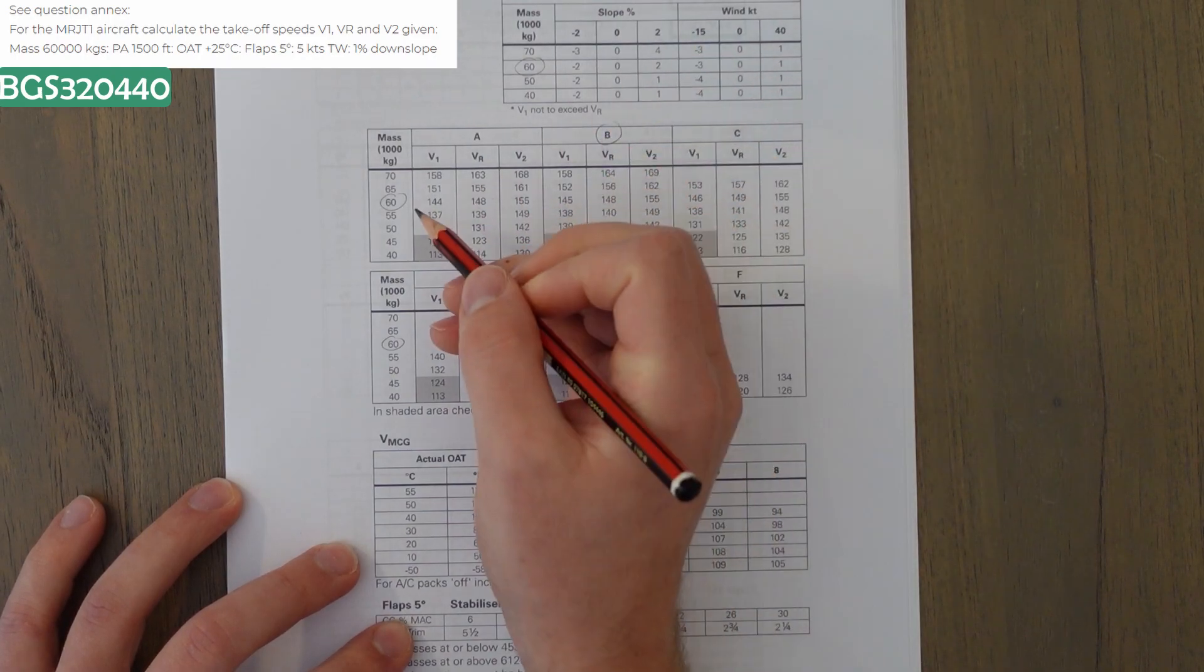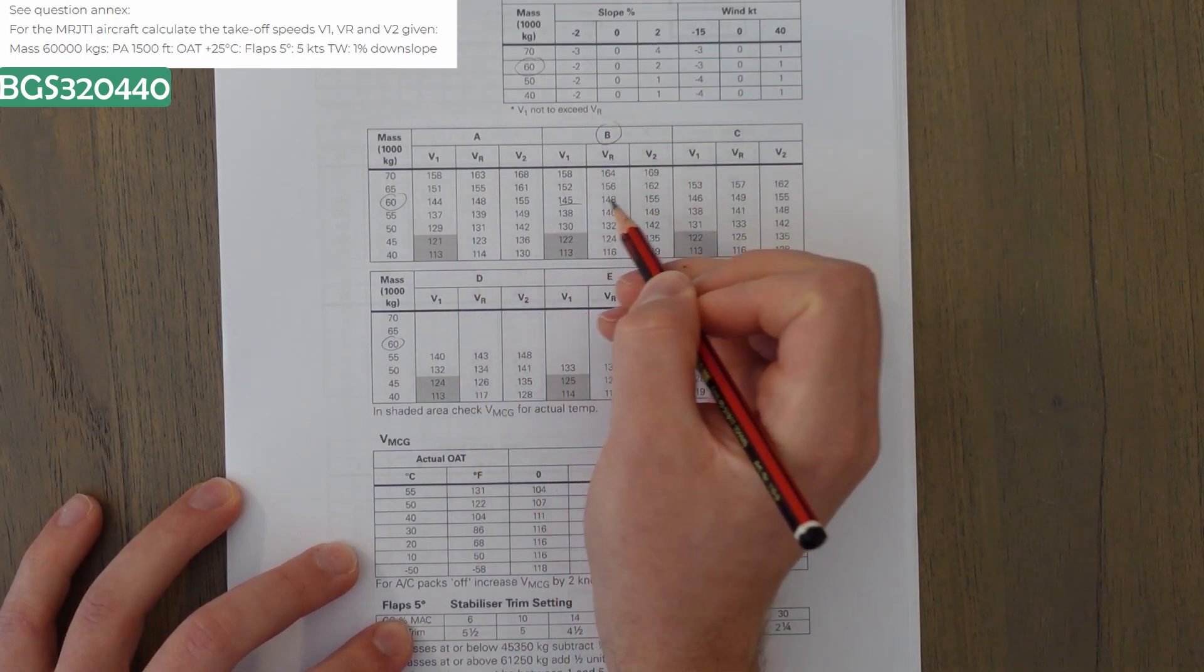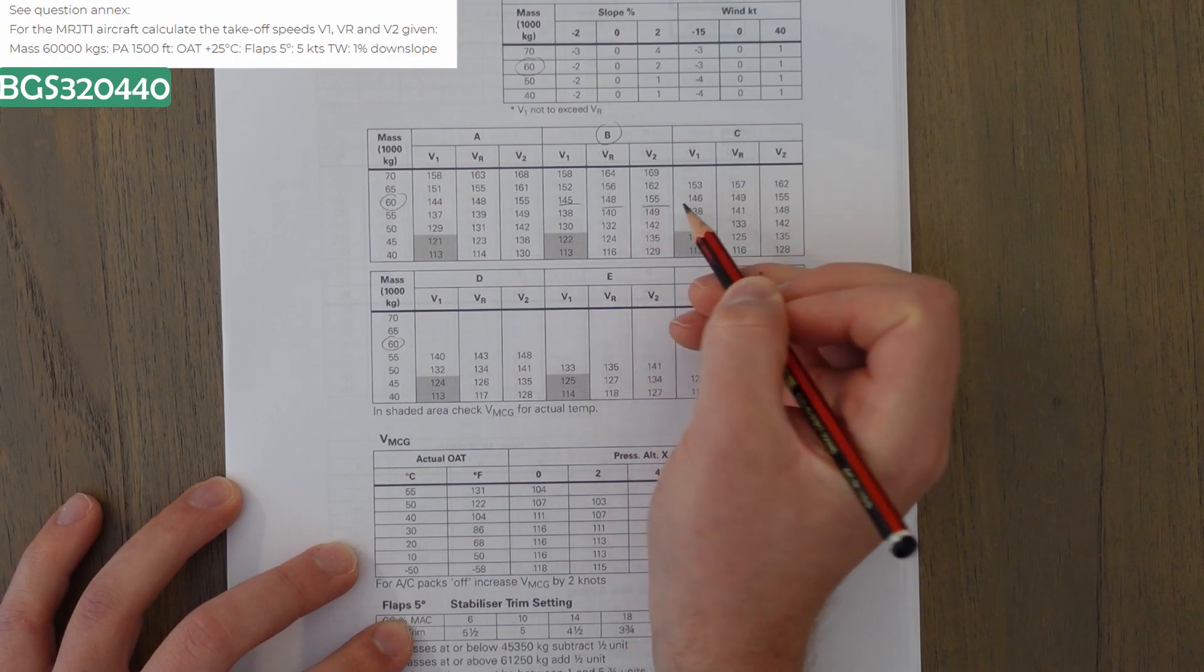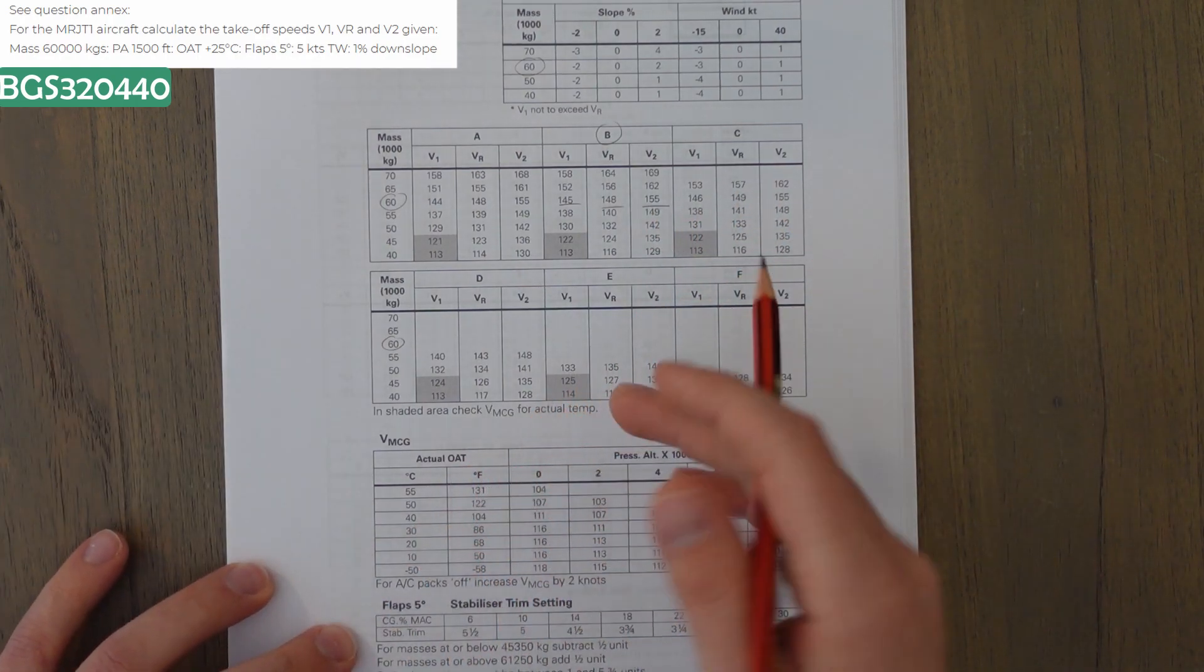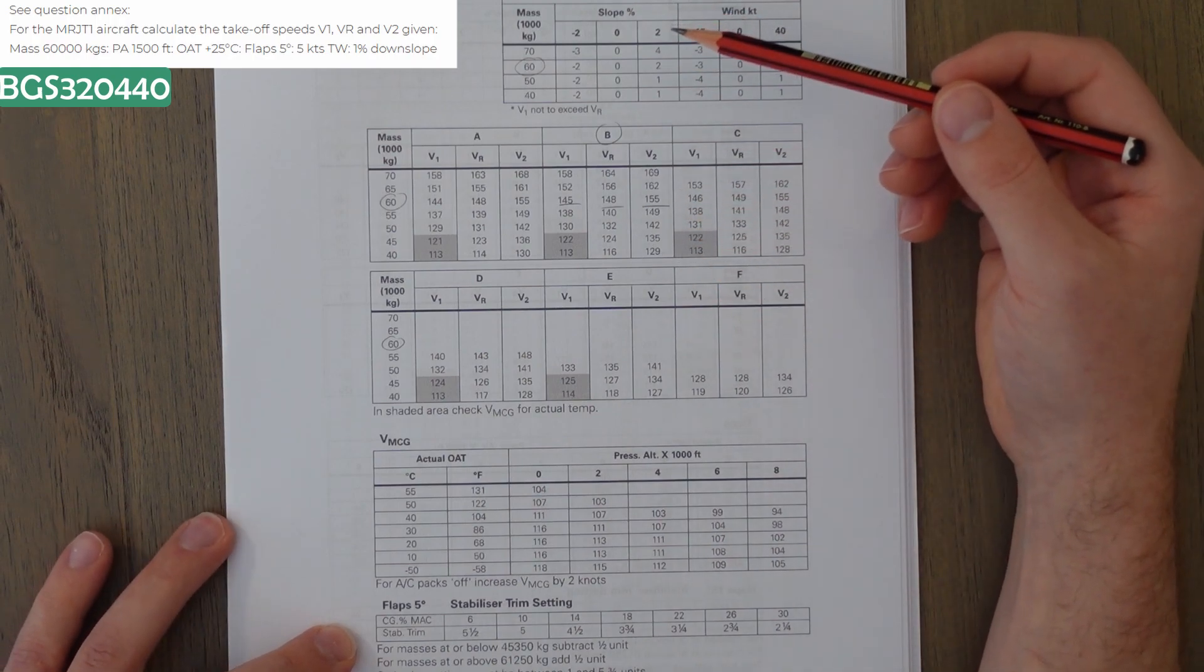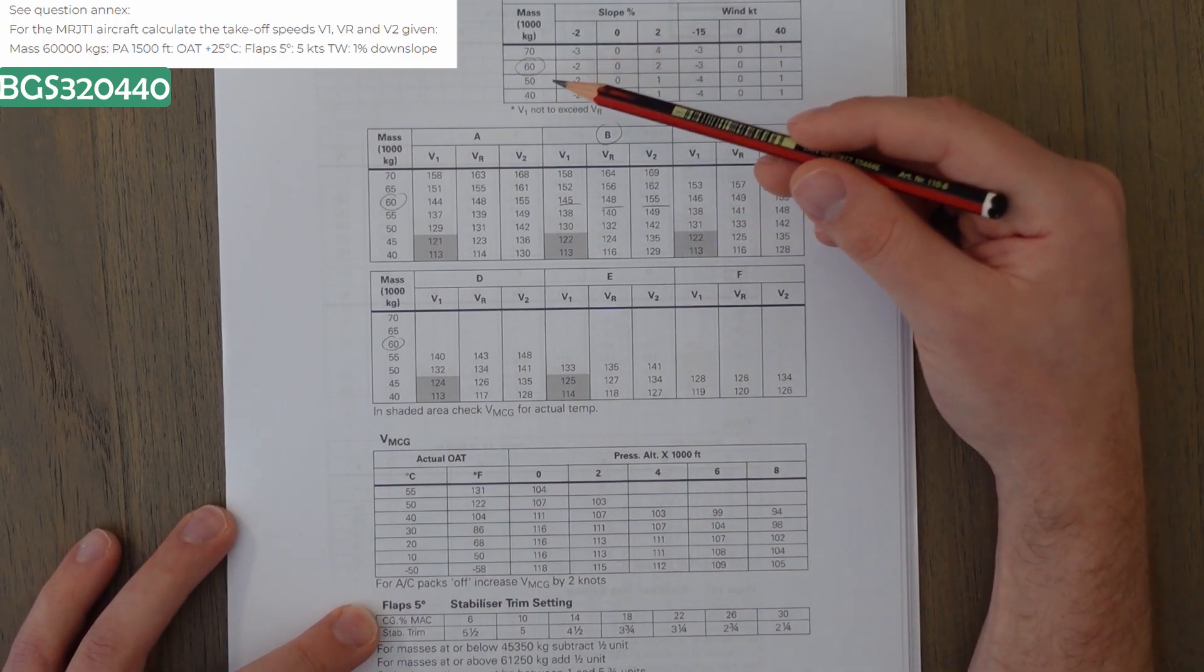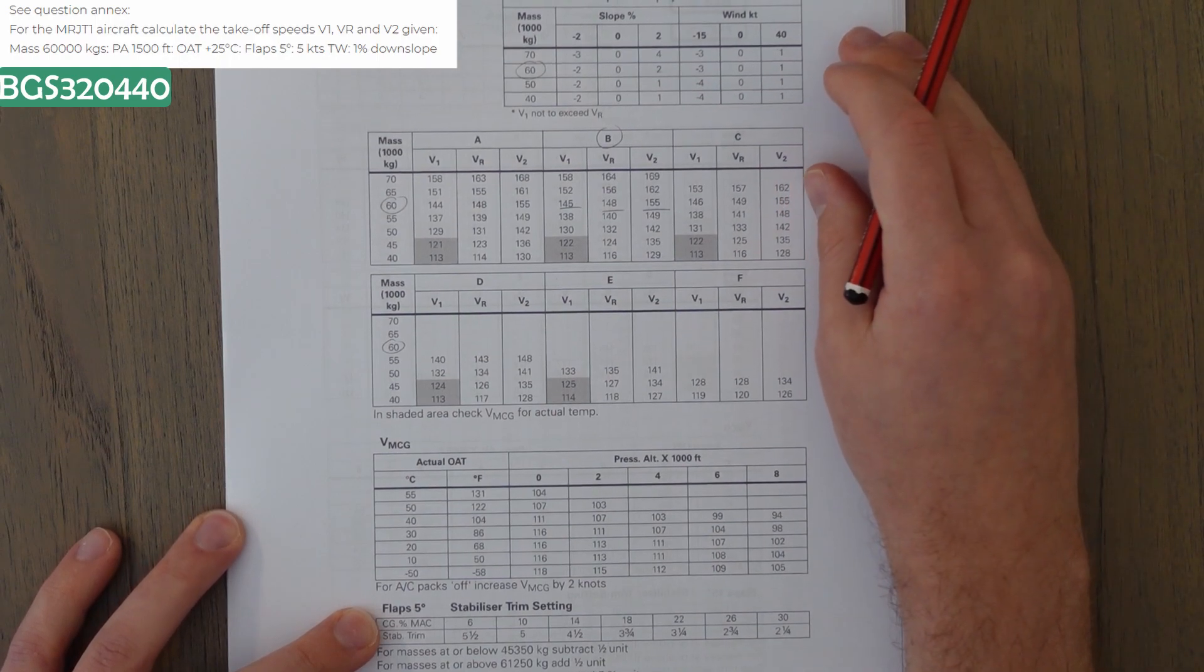Okay, so in table B, for 60,000 kilograms, we're looking at V1 of 145, VR of 148, and V2 of 155. So, we've got a nice baseline. And then from that baseline, we can correct for the V1 adjustments because of slope and wind.